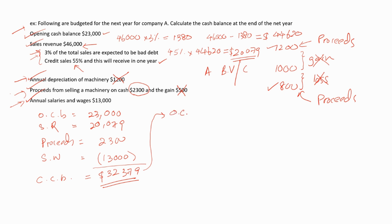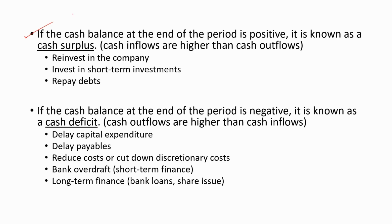This amount will be the opening cash balance for the year after the next year, which will be $32,379. This is a positive value, which means this is a surplus value. If the balance were a negative value, that would be a deficit, meaning the company does not have enough money to operate the business. If the cash balance at the end of the period is positive, it is known as a cash surplus.